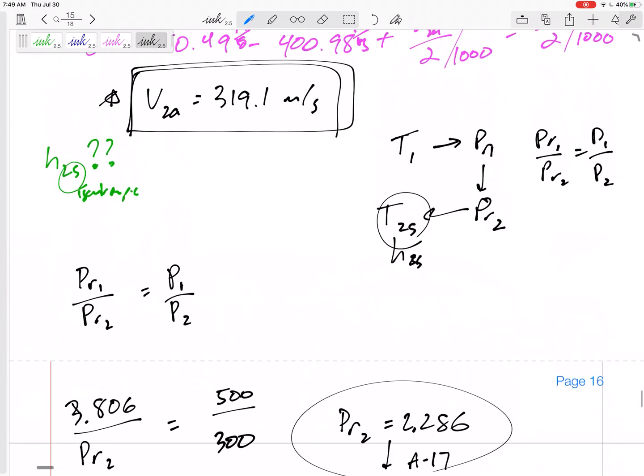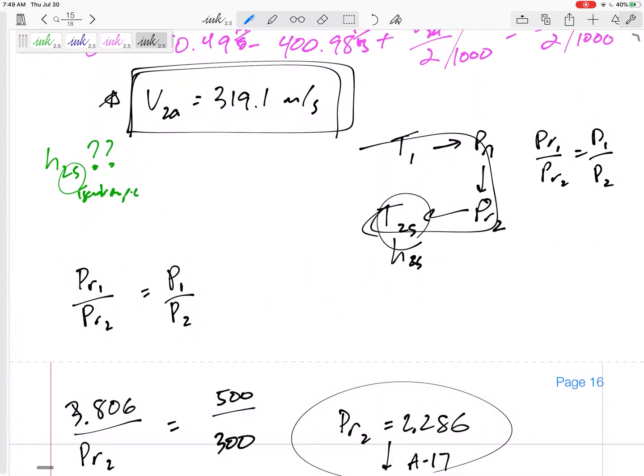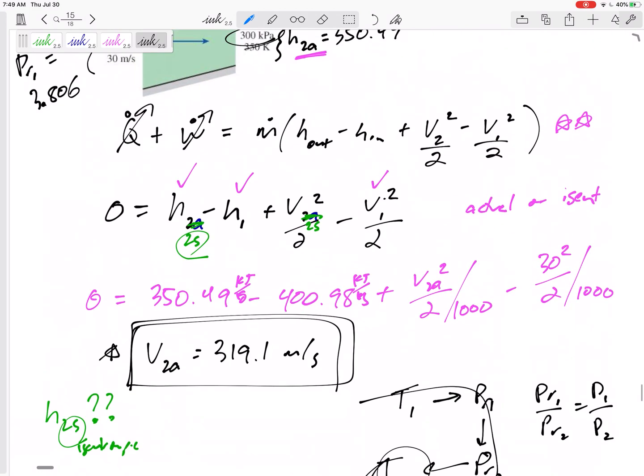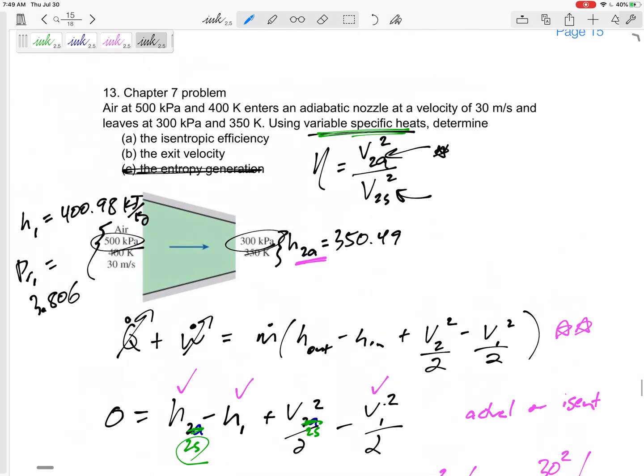But what did we do? We used this process to get h2s and we used conservation of energy to get the velocities. We used the relative pressure process because we wanted variable specific heats to get h2s, and used conservation of energy to get those velocities. We already had h2 actual.